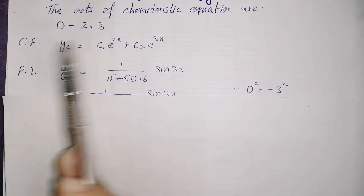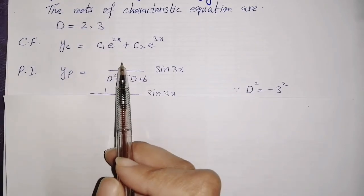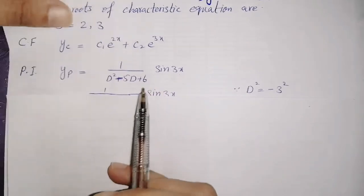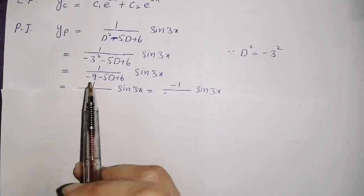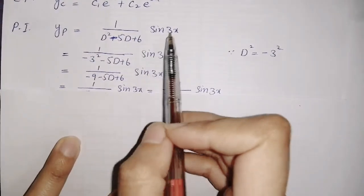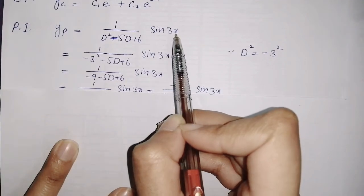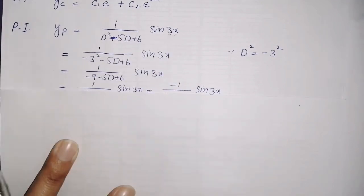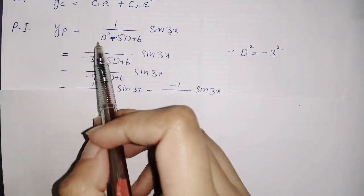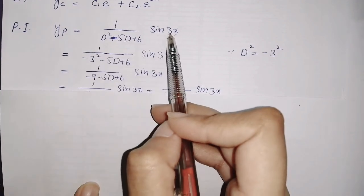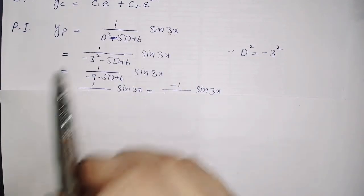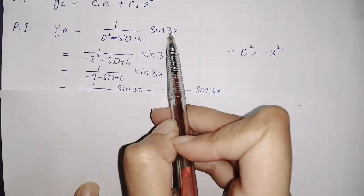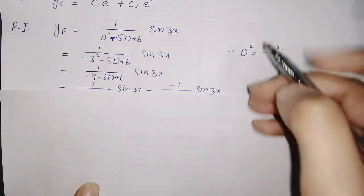Now we need to calculate the particular integral, so write it as 1/f(D) · sin 3x. The key point here is: for sin 3x, the coefficient of x is 3, and we need to put it in the even powers of D. For even powers of D, take the square of 3 and then its negative.